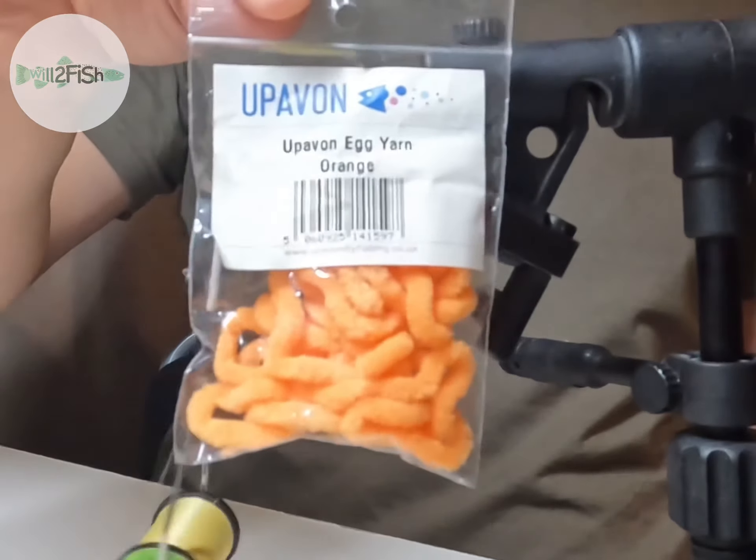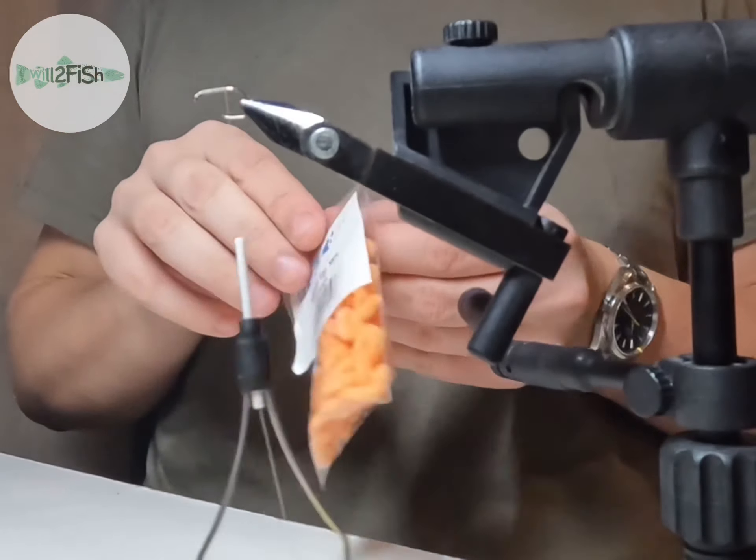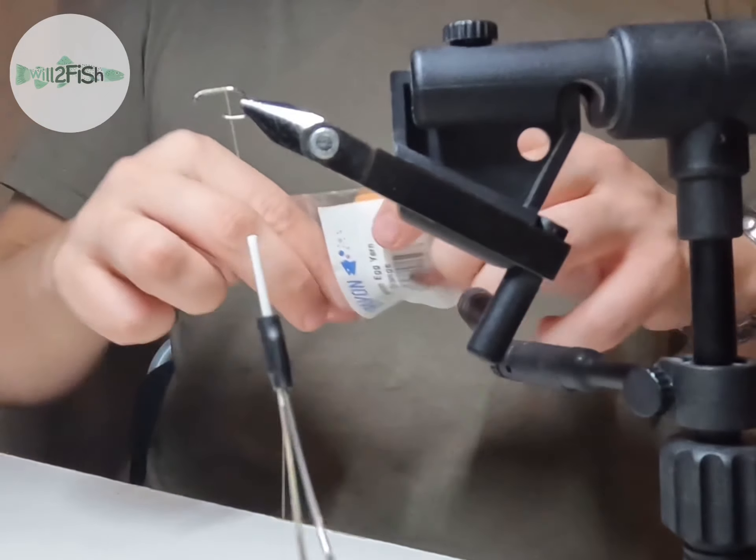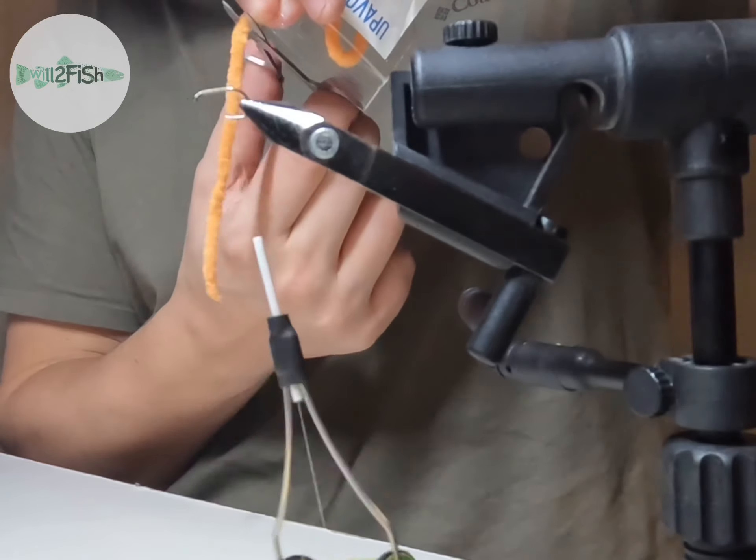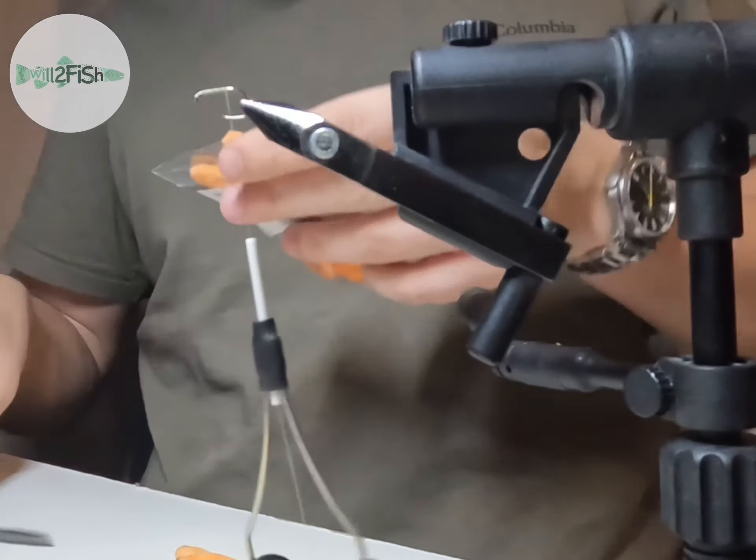So I'm using this Uphaven egg yarn in the orange color, they do do other colors. I've also got some shiny sparkly yarn as well, but the thicker orange body yarn is ideal for the egg pattern.